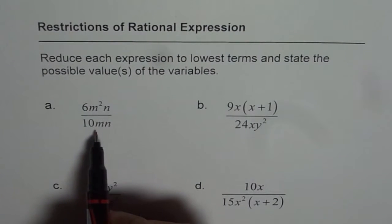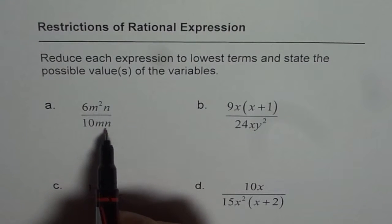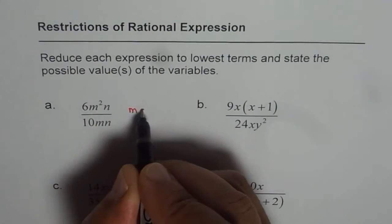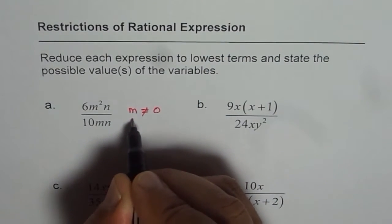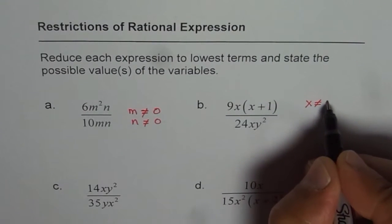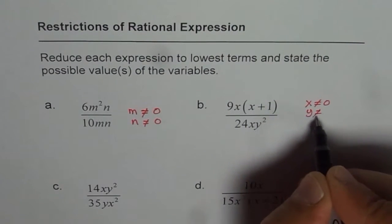Starting for part A, denominator will be 0 if M is 0 or N is 0. So we say that M is not equal to 0 and N is not equal to 0. In this case, X is not equal to 0 and Y is not equal to 0.